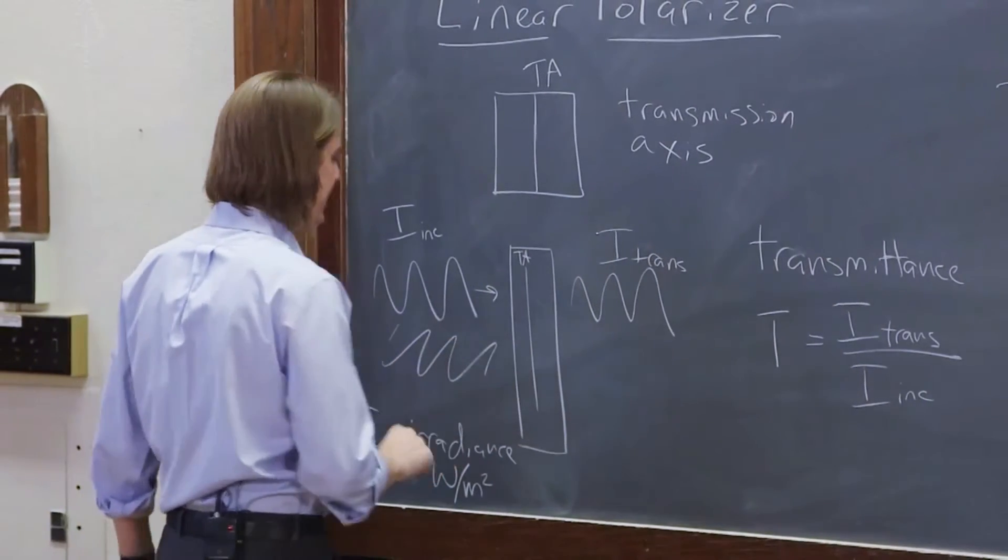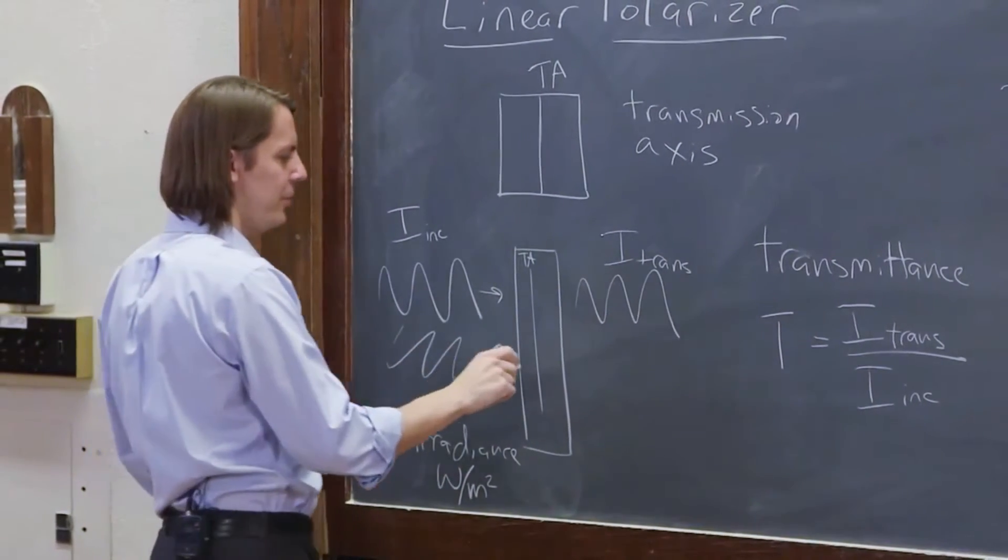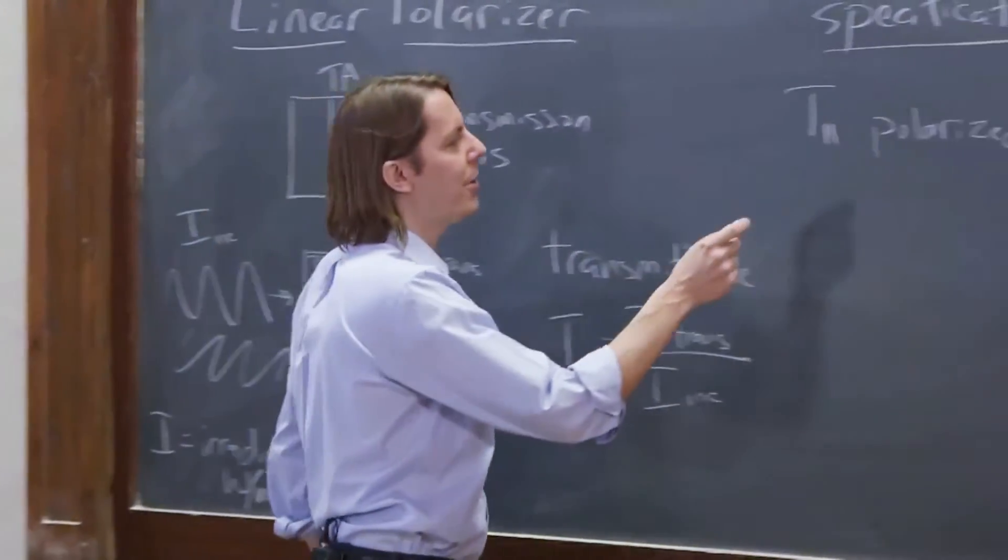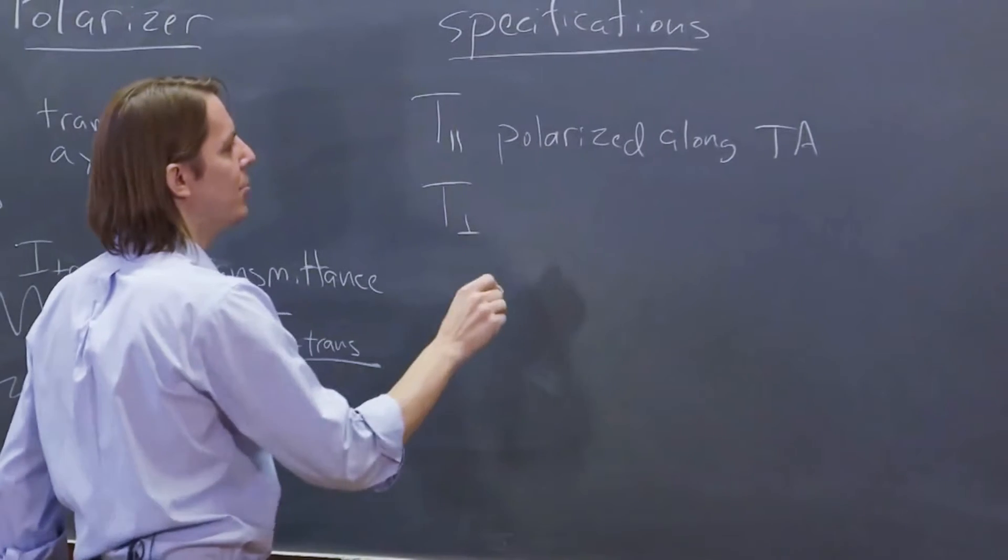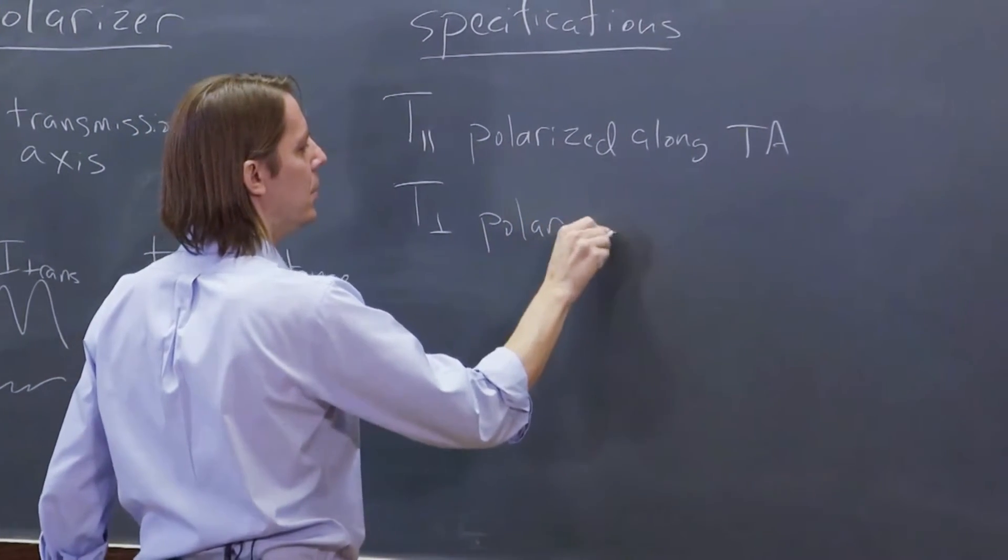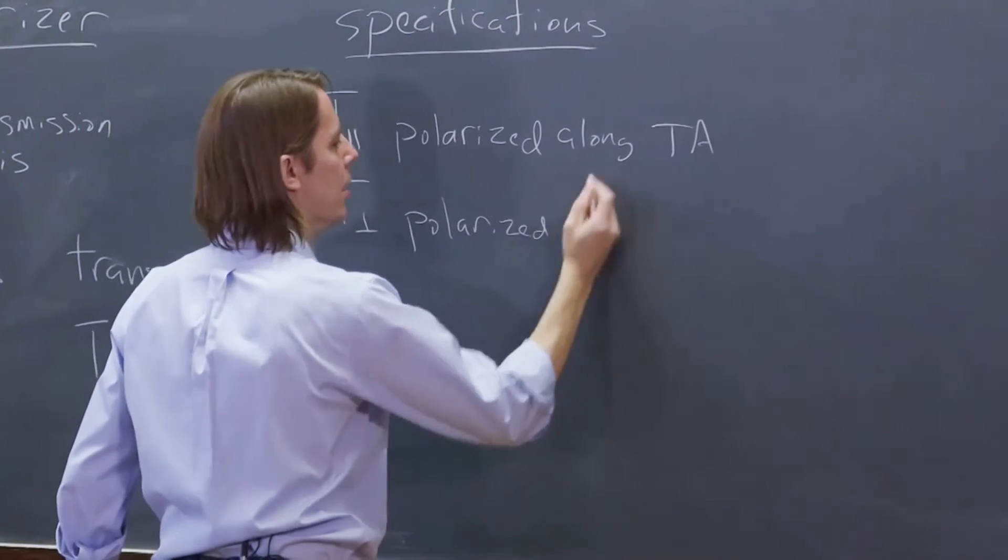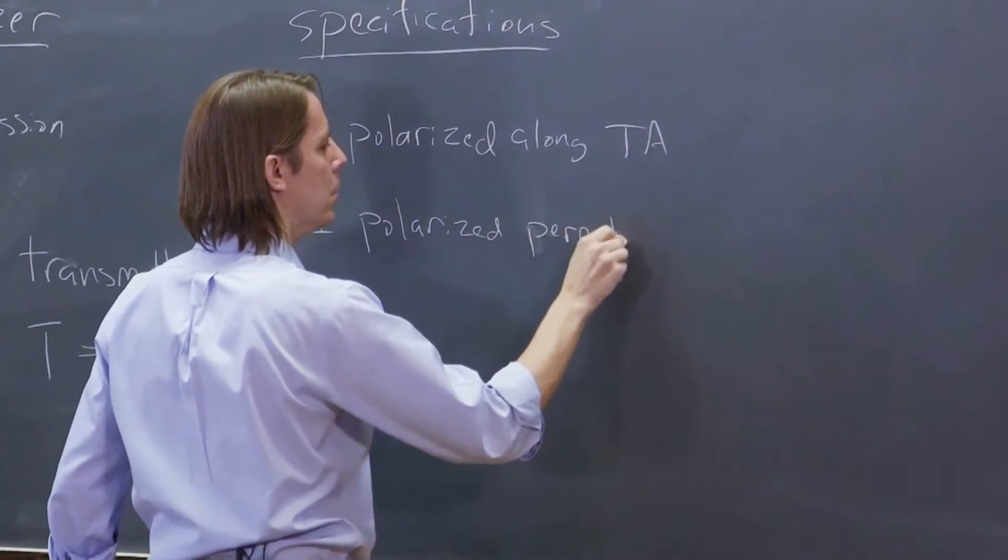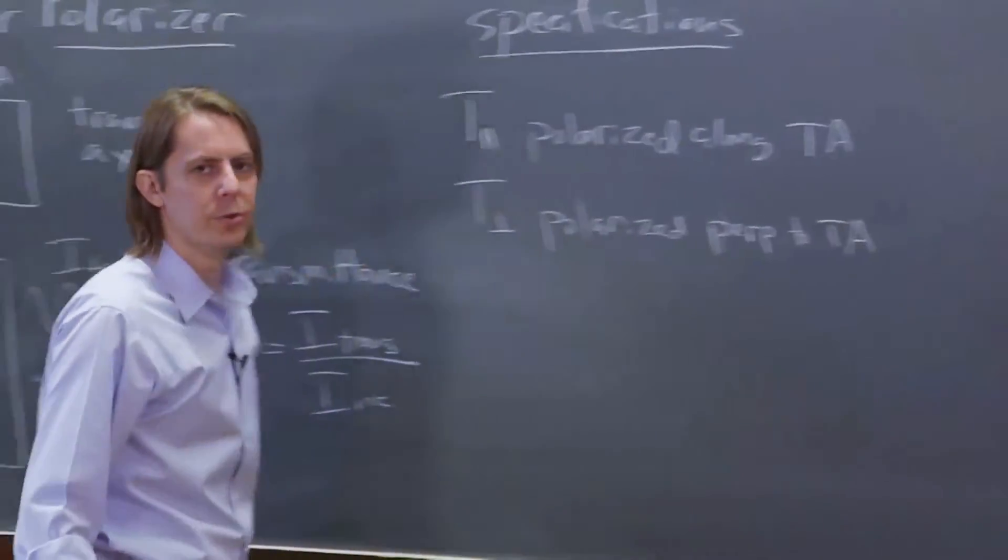I could also draw this, kind of looking like it's polarized 90 degrees, and we can see how much of that gets through. So you can have T parallel, and you can have T perpendicular, which is the transmittance for light polarized perpendicular to the TA.